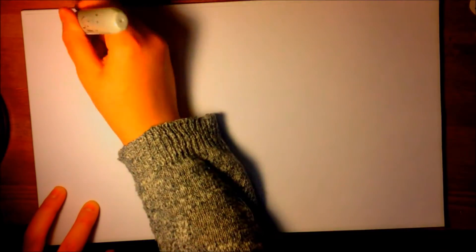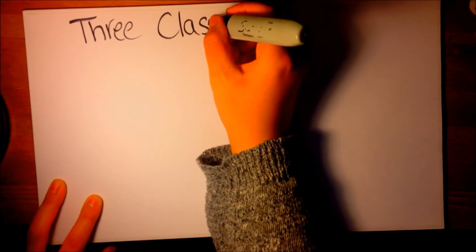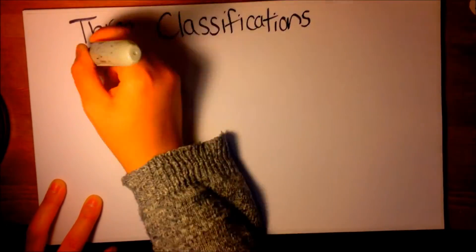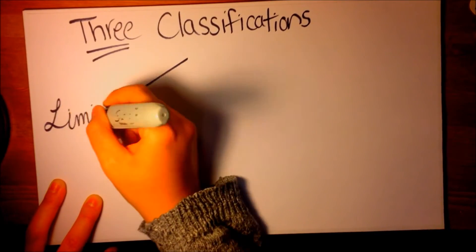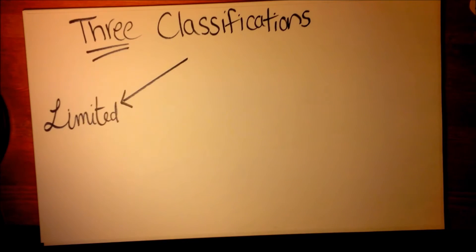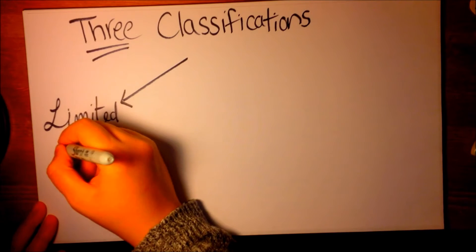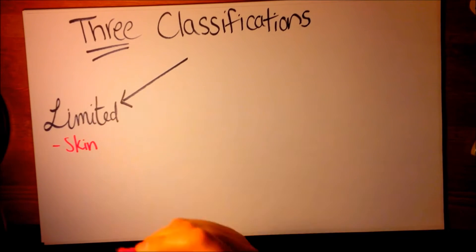Scleroderma can present in three different ways: limited scleroderma, diffuse scleroderma, and overlap syndrome. Limited scleroderma is associated with skin thickening limited to areas below the elbows and knees with less internal organ involvement.